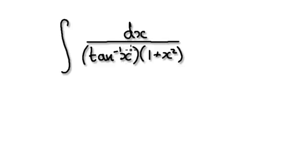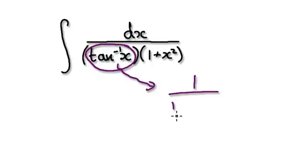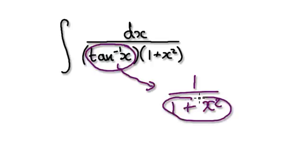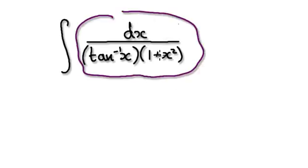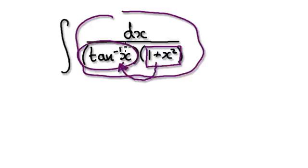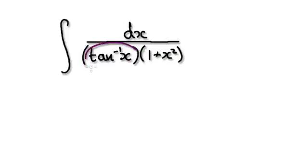For example, if you look at this here, when you differentiate this, it will give you 1 over 1 plus x squared. The point I'm trying to make is, when you're trying to integrate something complicated, try to keep an eye out on something being the derivative of another thing. This thing here, in a way, is the derivative of this thing here. So let this be u. When you differentiate it, it will give you something of this form here.